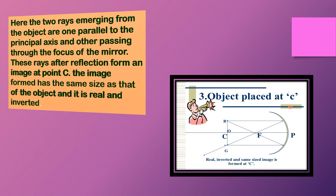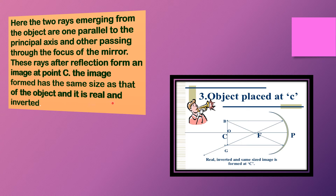Case number three: object placed at C. See, this is the object and this is the image. One ray is coming parallel to the principal axis and after reflection it passes through the focus. Another ray passes through the focus, so after reflection it goes back through the focus. So the image is formed here. The size of the object is equal to the size of the image. The two rays emerging from the object form an image at point C. The image formed has the same size as the object, and it is real and inverted.